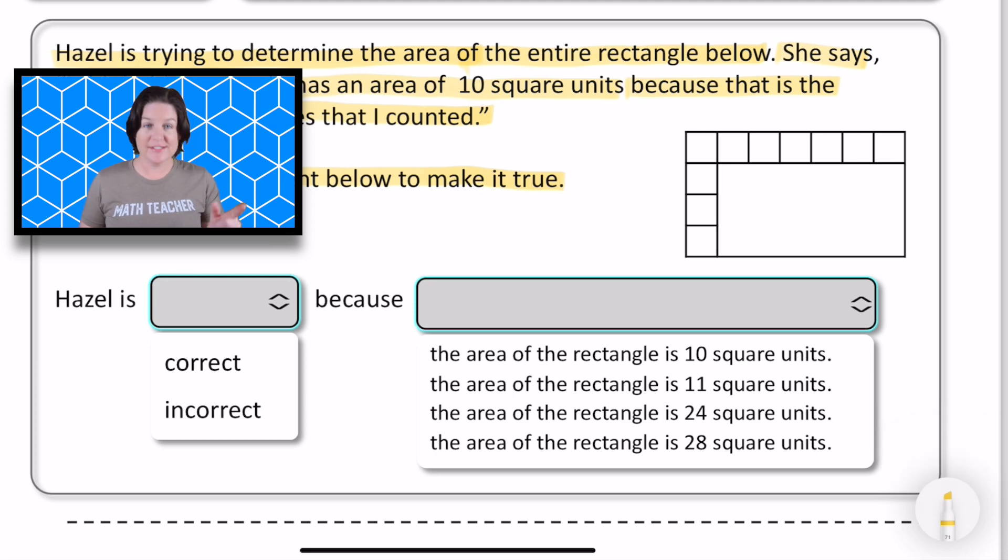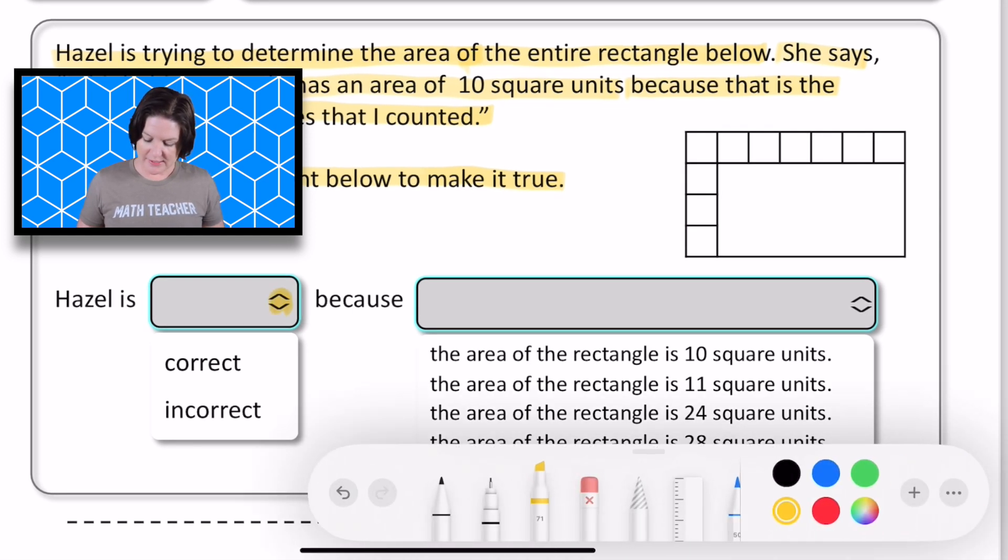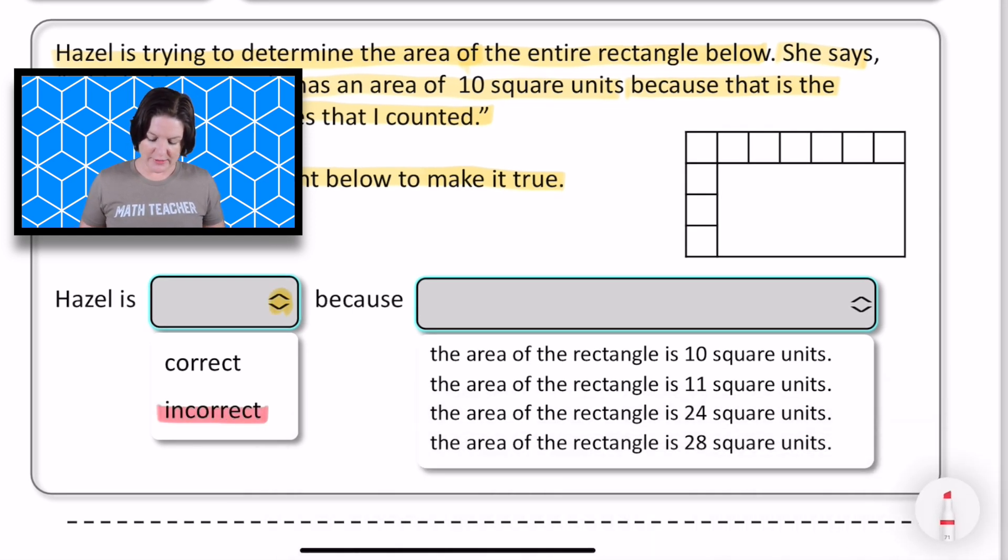So let me just erase this right here. So for part of the answer, it says Hazel is correct or incorrect. Well, we can go ahead and click that dropdown menu right there and we can select incorrect because, and then all of these say the area of the rectangle is blank square units. So let's go and figure out how many square units this is.